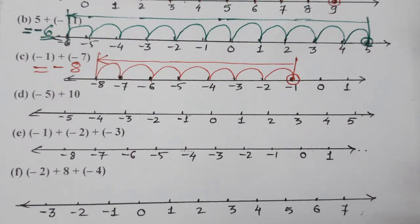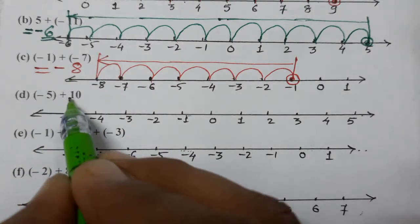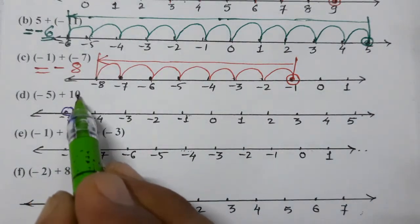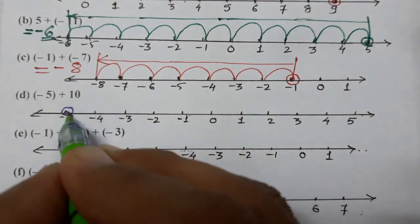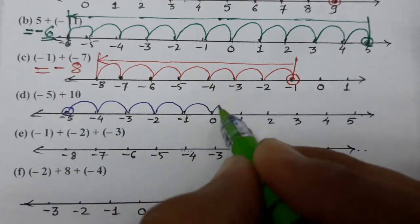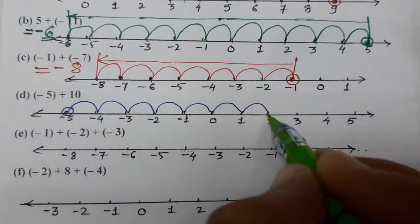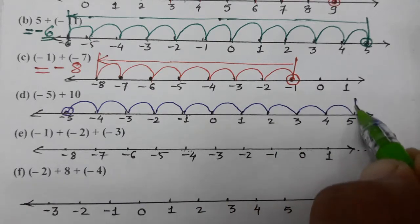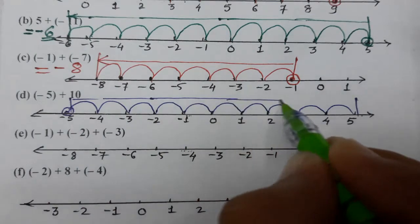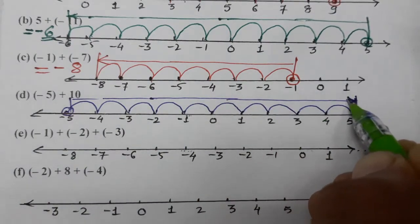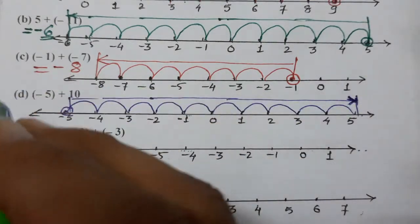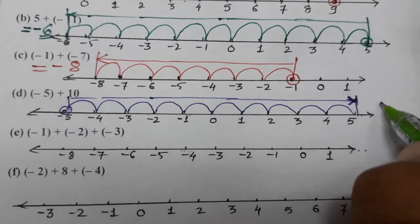Now (d): (-5) + 10. We start with minus 5 on the number line. Plus 10 shows that we have to move ten points towards the right — one, two, three, four, five, six, seven, eight, nine, and ten. We reach at 5, and the arrow indicates we are moving towards the right. So the answer is 5.